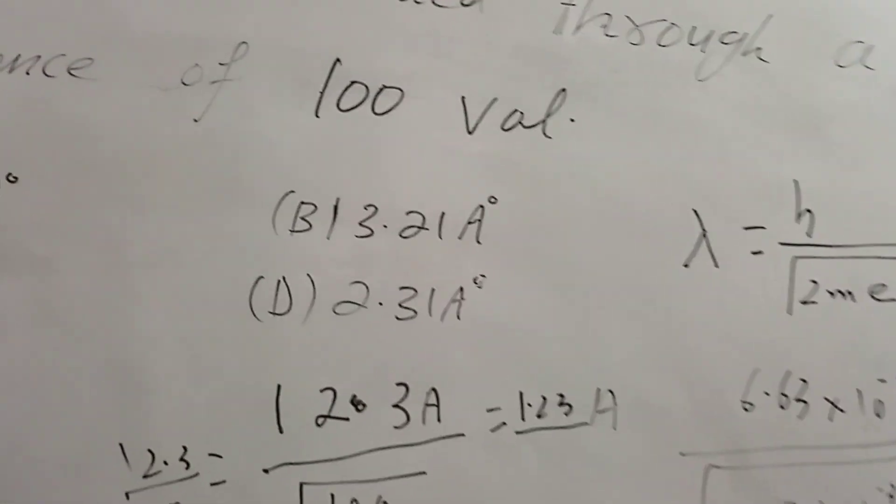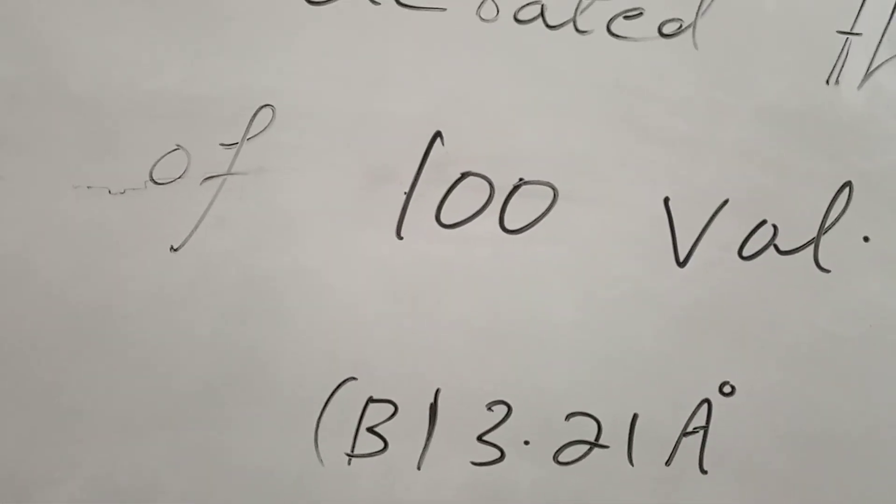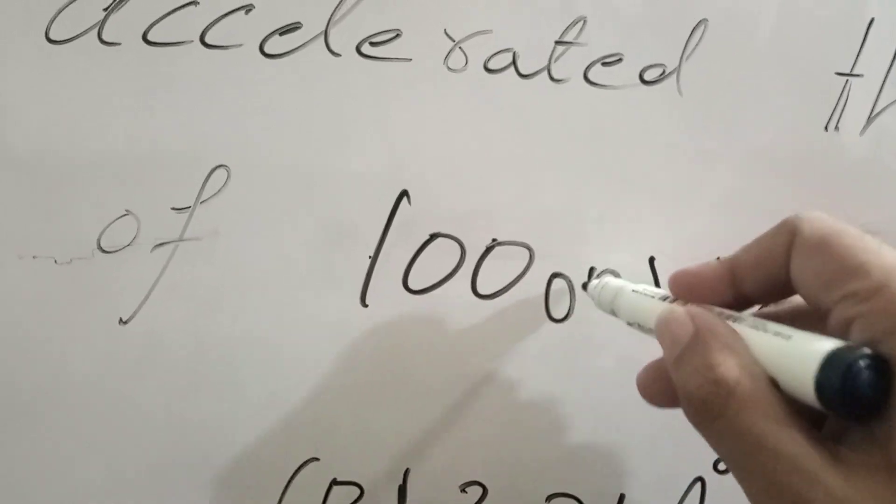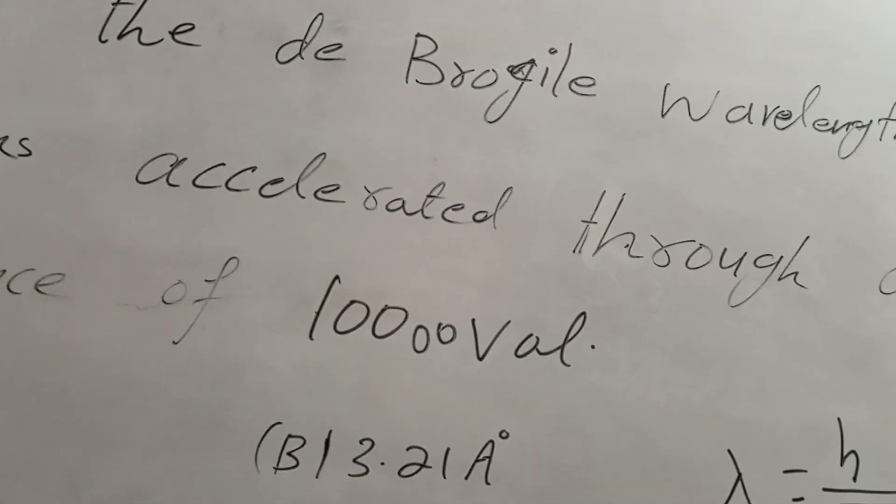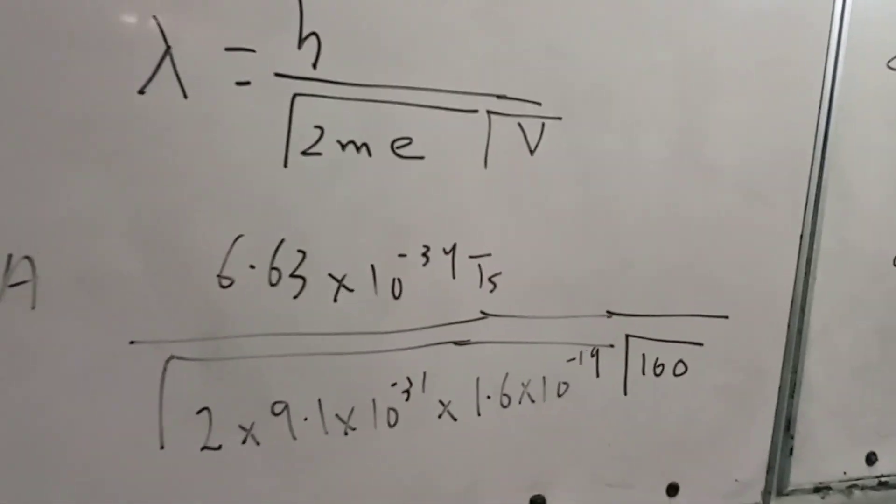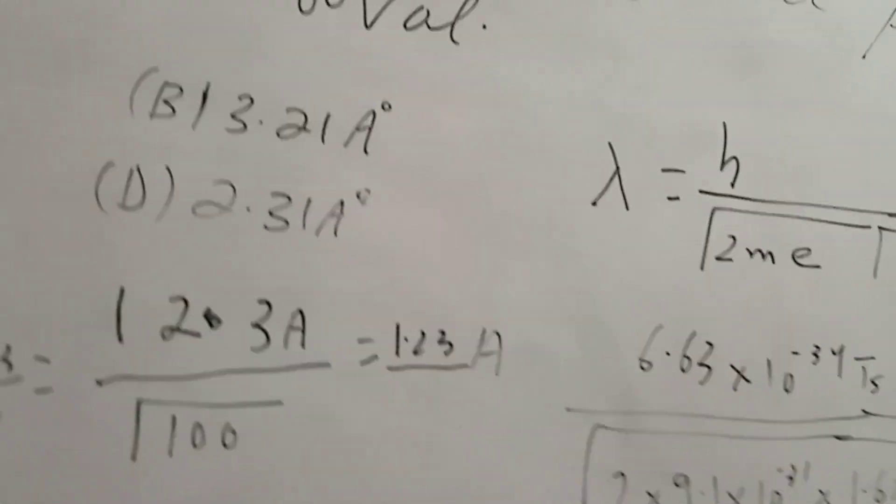There are questions on De Broglie. What was the next step? It was 100,000V. So I should remember this formula, but I don't want to do it. I will do it directly.